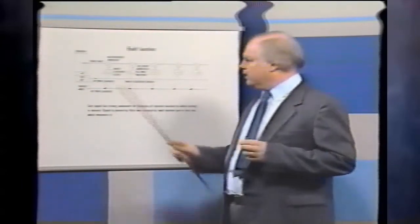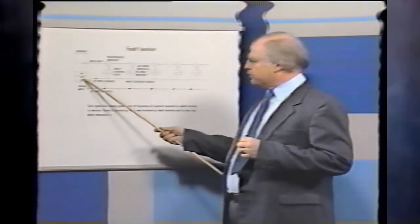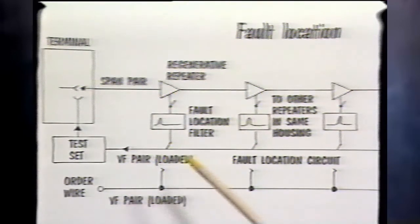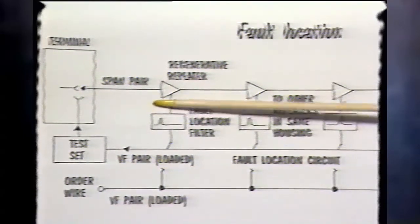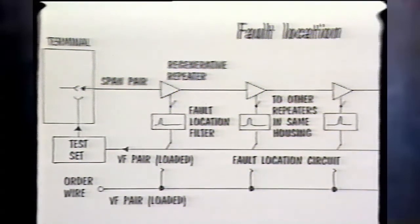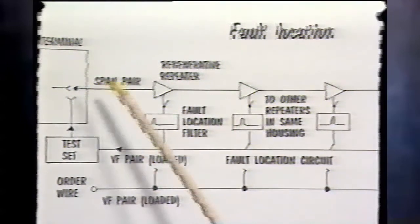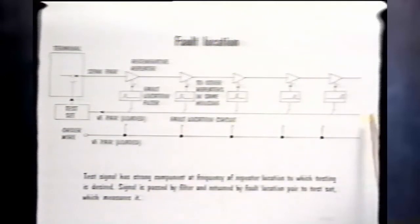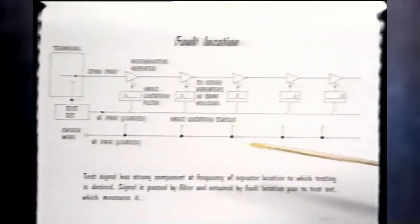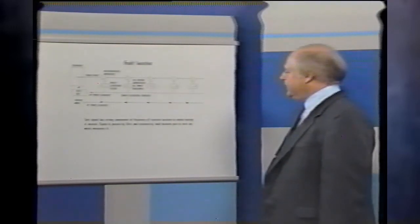There is of course another direction of transmission. To test that, the technician throws a key on the test set which applies a certain battery polarity over this pair. At each repeater location, that operates a relay or switching circuit which flops all of these filters over to outputs from the westbound repeaters. At the same time, at the distant central office, the digital signal is looped back so that whatever makes it that far will be turned around at the DSX-1 cross-connect and come back. The process is worked one stage at a time, backing down through the different test signals with the pickup filters now connected on the east-to-west direction. Thus, without dispatching anyone to the field, plant test personnel are able to determine in which repeater section a system malfunction has occurred.